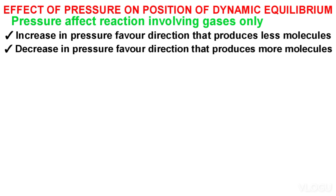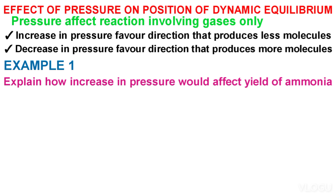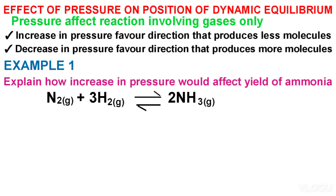Example 1: Explain how an increase in pressure will affect the yield of ammonia in the equilibrium mixture: N₂ + 3H₂ ⇌ 2NH₃. Before answering, a student needs to note: where the forward reaction is favoured, there is an increase in the yield, concentration, or amount of ammonia. Where the backward reaction is favoured, there is a decrease in the yield, concentration, or amount of ammonia.